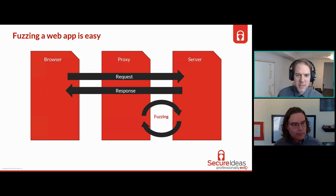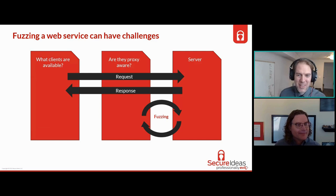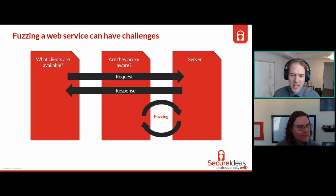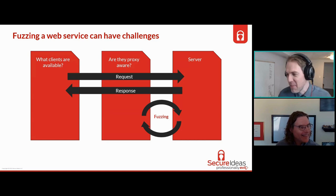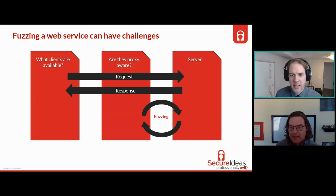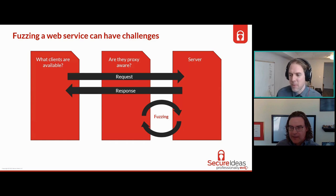Moving forward, web services have come along of various kinds. Things like REST aren't new - we're going to talk about SOAP a little bit today too. The web services come with various technologies and different characteristics. As security professionals, we need to figure out how to fuzz these things, because there isn't necessarily a clear map for how to do that. Questions come up: what clients are available? If it's a web service you're directly interacting with, you need some sort of client app.